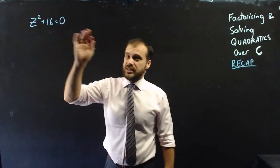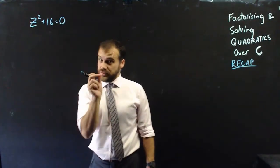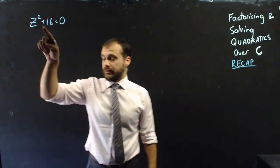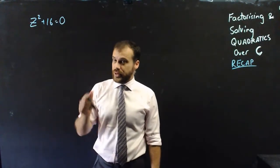So our first one here, z² + 16 = 0, is a difference of two squares. And you might be looking at that plus sign saying that's not a minus, it's not a difference of two squares.